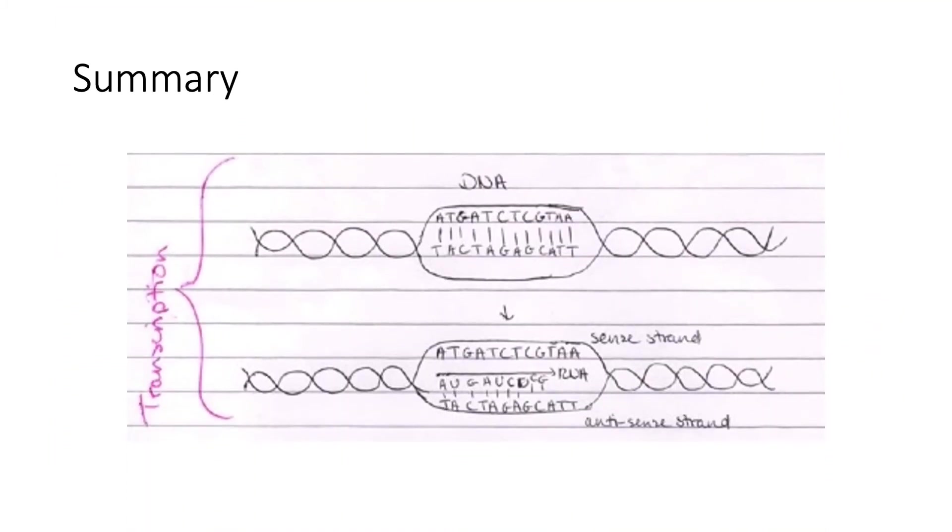In the summary diagram here, you can see how a DNA molecule is turned into an mRNA strand. On the antisense strand, the triplet code TAC is converted to AUG, which will code for a specific amino acid. You don't need to know exactly which one, but it's good to see a named example.